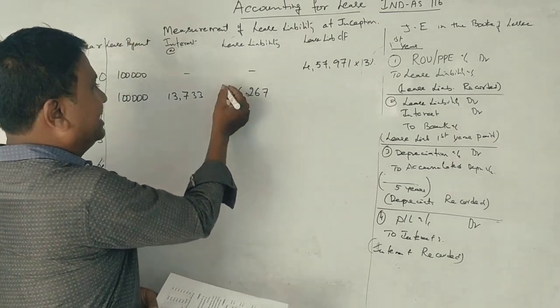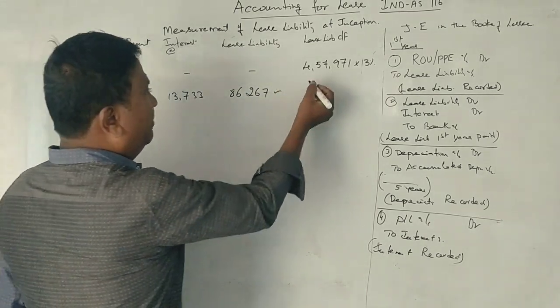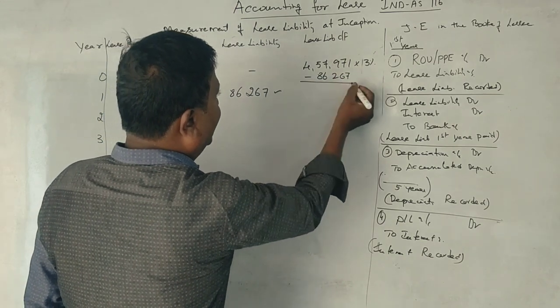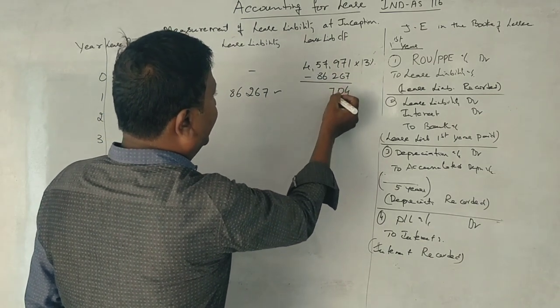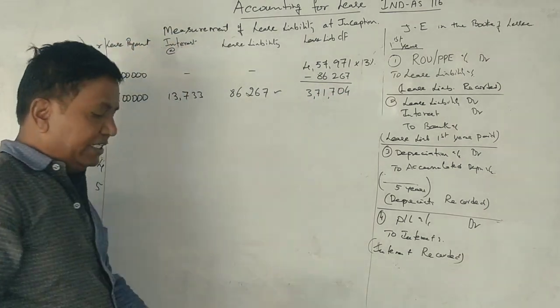1st year lease liability, 86,267 Rs. Total lease liability minus 86,267 Rs.